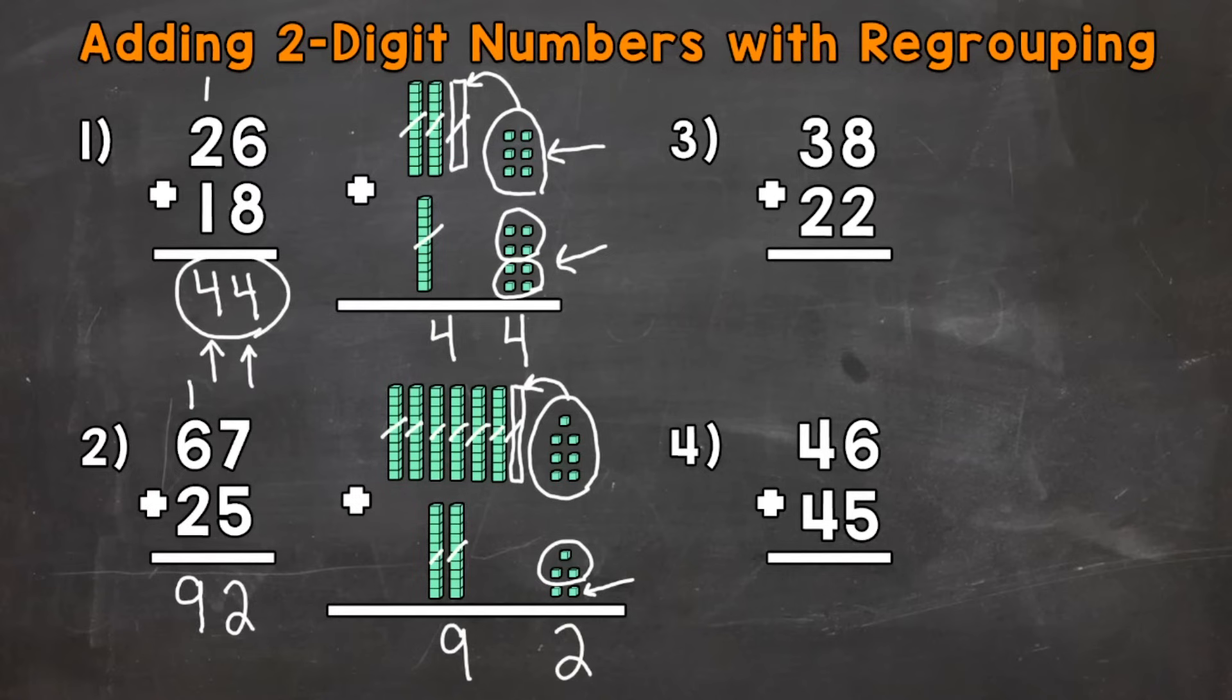Now that 9 has a value of 90 because it's in the tens place. And the 2 has a value of 2 because it's in the ones place. Now another way to think of this, the tens, let's take a look at the tens place.